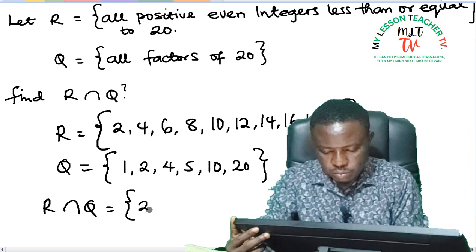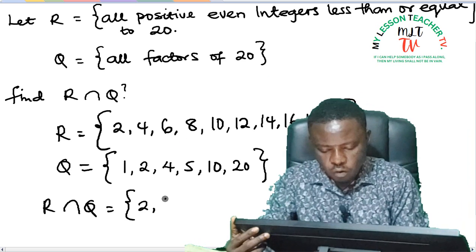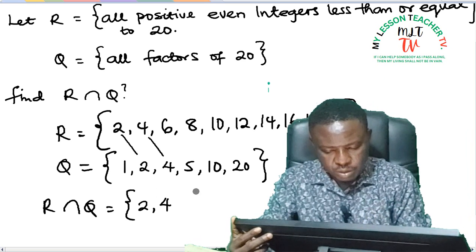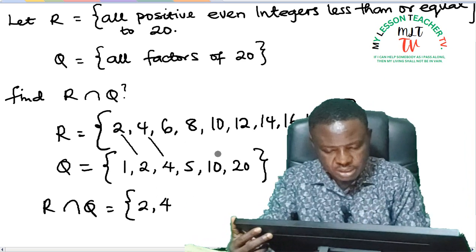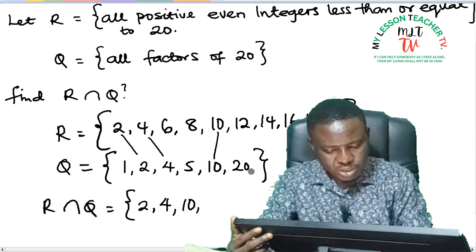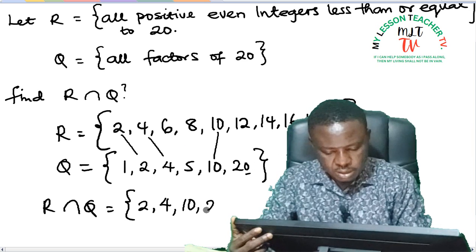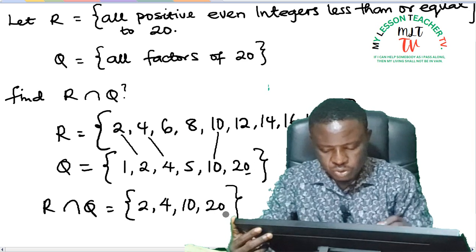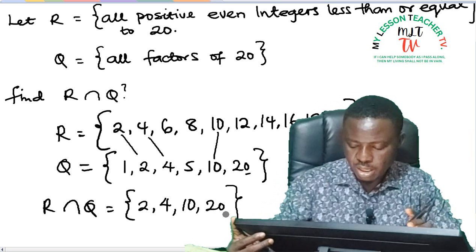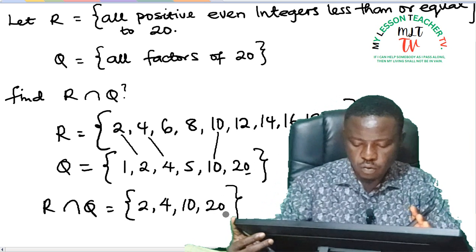So R intersection Q means all the elements you can find in set R and set Q. So we have 2, we have 4—2 is here, 4 is here. 5 is not here, 6 is not. So we have 10 and we have 20. So the intersection of sets R and Q are said to be 2, 4, 10, and 20.